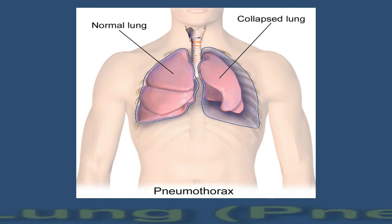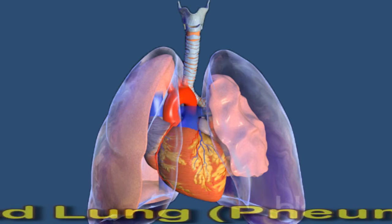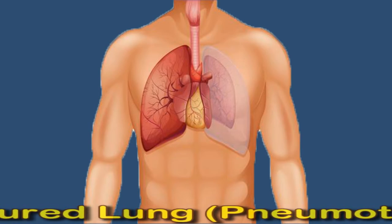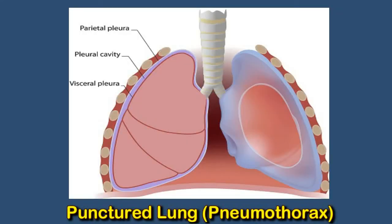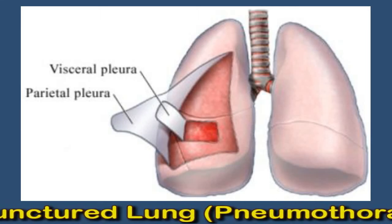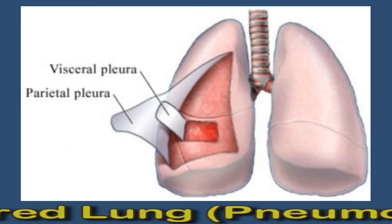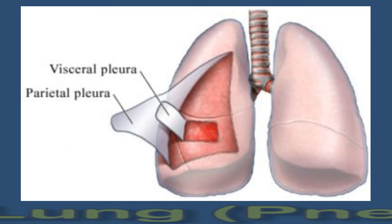A punctured lung, or pneumothorax, involves air escaping from the lung into the space between it and the chest wall. The condition can cause the lung to collapse, making breathing difficult. There are two layers of protective tissue called the visceral and parietal pleura that surround the lung. The space between the two layers is called the pleural cavity, or pleural space.